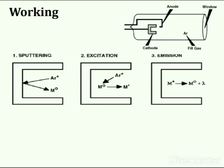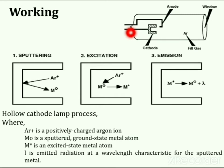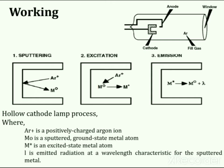When an electrical potential is applied between the anode and cathode, some of the fill gas atoms are ionized. The positively charged fill gas ions accelerate through the electrical field, collide with the negatively charged cathode, and dislodge individual metal atoms in a process called sputtering. Sputtered metal atoms are then excited to an emission state through kinetic energy transfer by impact with fill gas ions, and the excited atoms generate an emission spectrum. In this process, Ar⁺ is the positively charged argon ion, M⁰ is the sputtered ground state metal atom, M* is the excited state metal atom, and L is emitted radiation at a wavelength characteristic to the sputtered metal.